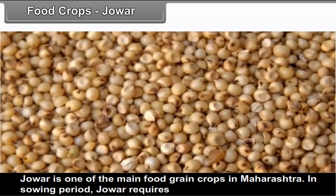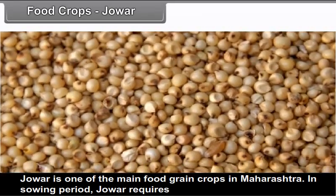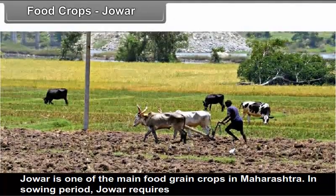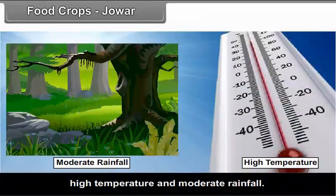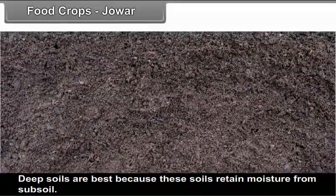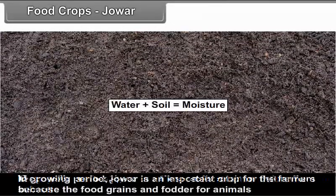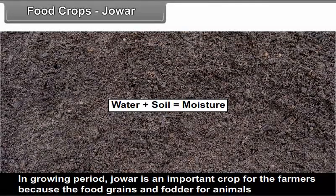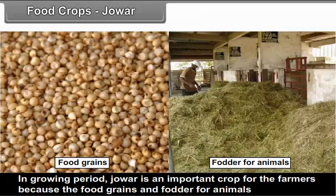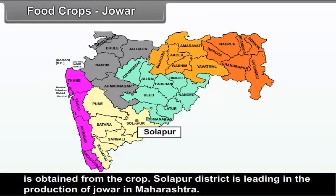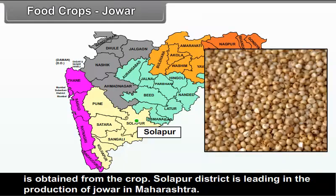Food Crops — Jowar: Jowar is one of the main food grain crops in Maharashtra. In the sowing period, jowar requires high temperature and moderate rainfall. Deep soils are best because these soils retain moisture from the subsoil. Jowar is an important crop as it provides food grains and fodder for animals. Solapur district is leading in the production of jowar in Maharashtra.